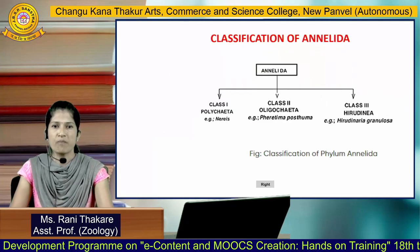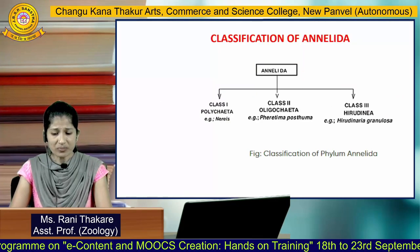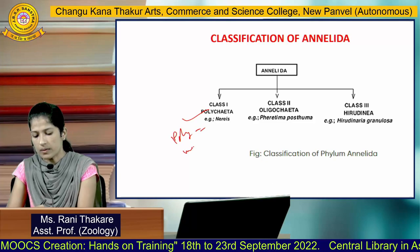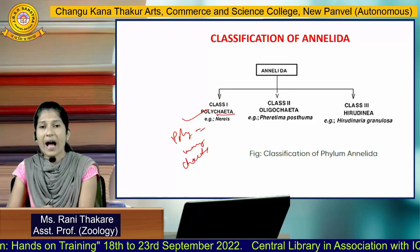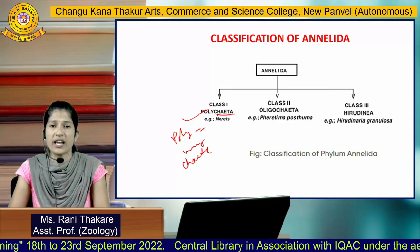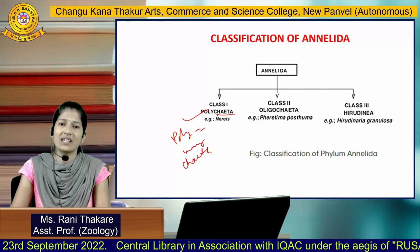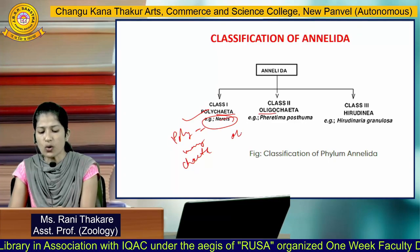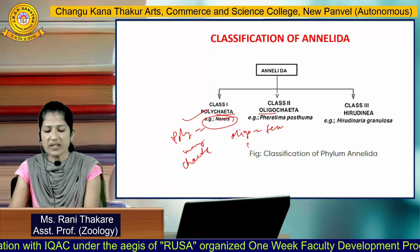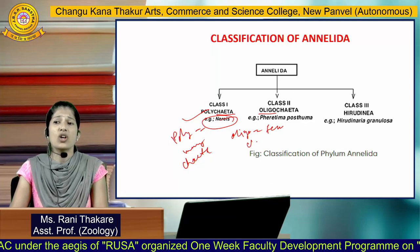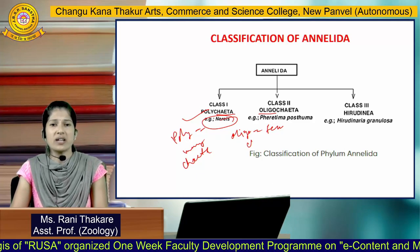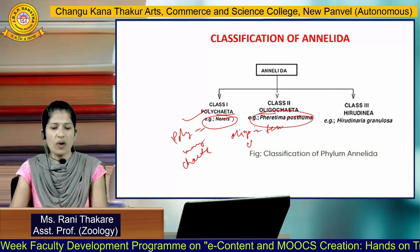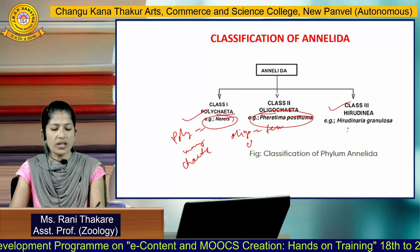Class 1, Polychaeta — 'poly' means many and 'chaeta' means hairs — animals with many hair-like projections on their body. Example: Nereis. Class 2, Oligochaeta — 'oligo' means few — animals with few setae. Example: Pheretima posthuma, commonly known as earthworm. Class 3, Hirudinea, with example: leech.